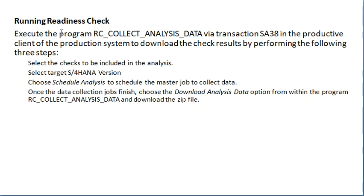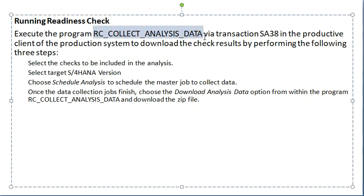After completing the node implementation, we run the Readiness Check. The Readiness Check starts in SA38 T-code, and we execute the program RCCollectData, CollectAnalysisData, in the Productive Client of the Production System to download the check results. Select the checks to be included in the analysis, and select the target S/4HANA version — for example, if we want to check S/4HANA 2020, we select S/4HANA 2020.